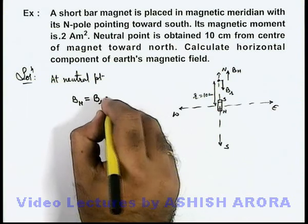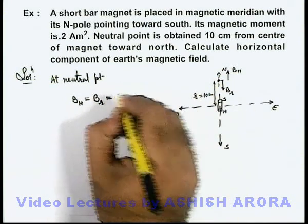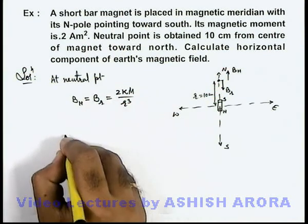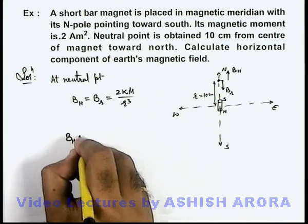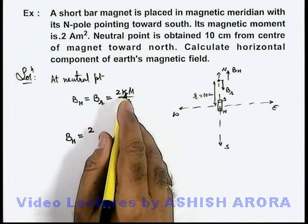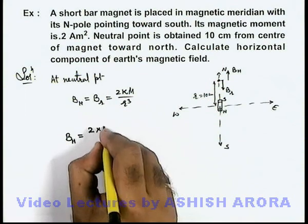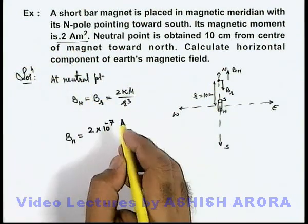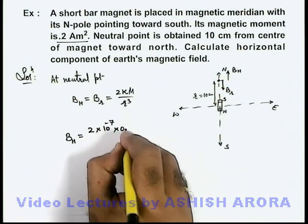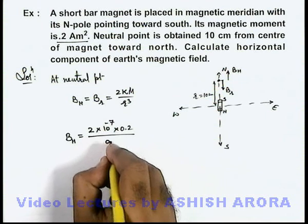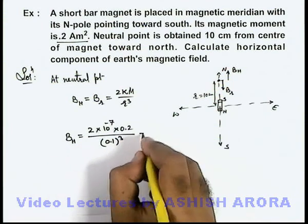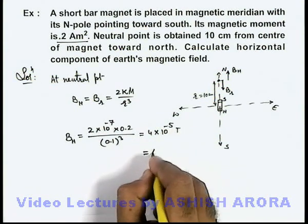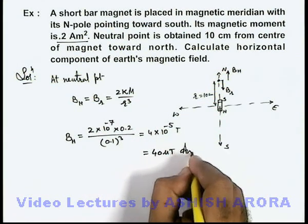In this situation, the magnetic induction due to the dipole — since it is small — gives us directly the value of the horizontal component of Earth's magnetic field as 2kM divided by r³. Substituting values: 2 × 10⁻⁷ × 0.2 divided by (0.1)³. Simplifying, this gives 4 × 10⁻⁵ tesla, which can be written as 40 microtesla. That is the answer to this problem.